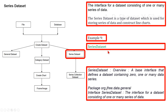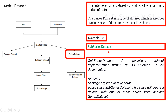Overview of SeriesDataset: a base interface that defines a dataset containing zero, one, or many data series. Interface SeriesDataset in package org.jfree.data.general is the interface for a dataset consisting of one or many series of data. This interface is implemented by the AbstractSeriesDataset class.